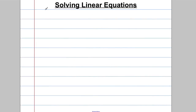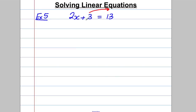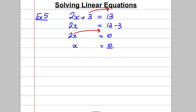Let's go to slightly more complicated cases. Example 5 — suppose we had more than one operation, something like 2X add 3 is equal to 13. Find X. I'd subtract 3 off both sides. 2X would be equal to 13 subtract 3. 2X would therefore be 10. Now we want X, not 2X. So we divide both sides by 2. X is equal to 10 divide by 2. X is equal to 5. Check: 2 multiplied by 5 is 10, 10 add 3 is 13. Got it.